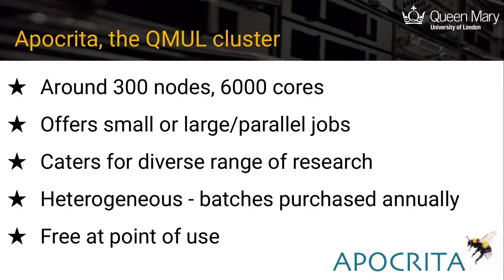The Apocrita cluster is owned by QMUL and is available to QMUL researchers. It currently has around 300 nodes, which equals around 6,000 cores. A core is part of a CPU that functions as a processing unit performing a task or workload. As we serve the research needs of the whole university, we do have some different hardware types. The Apocrita cluster gets refreshed regularly, ideally on an annual basis, so while the name stays the same, many components have been replaced multiple times over the years.